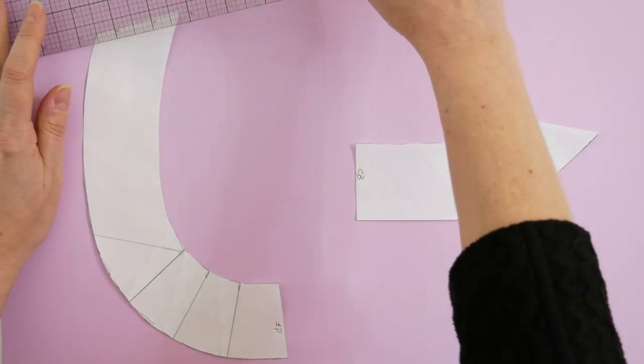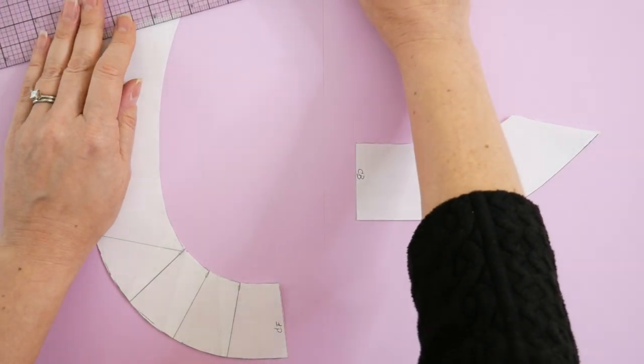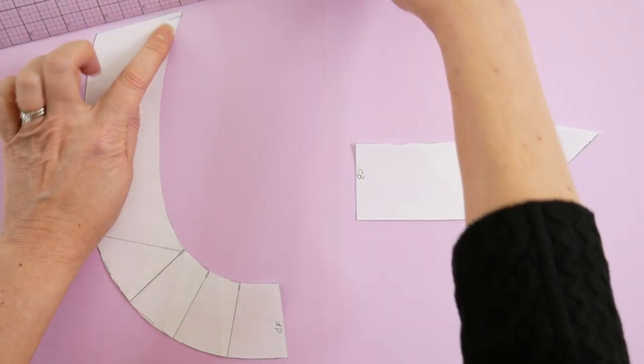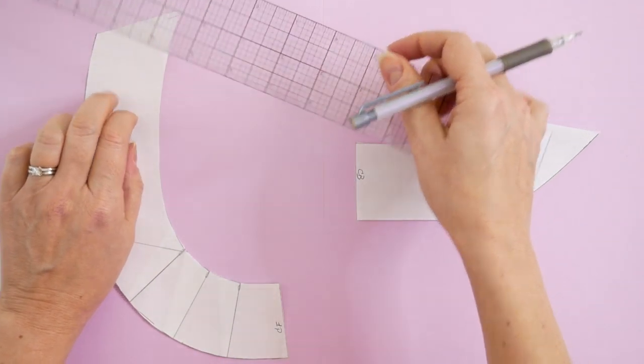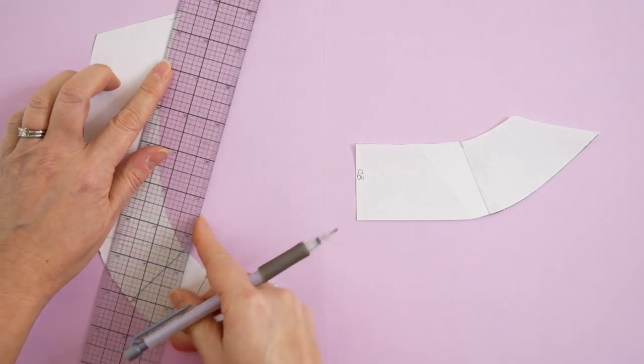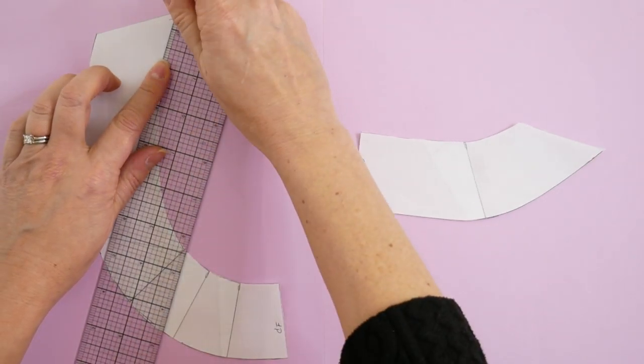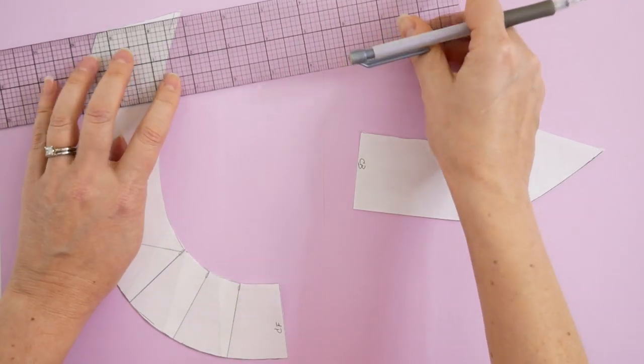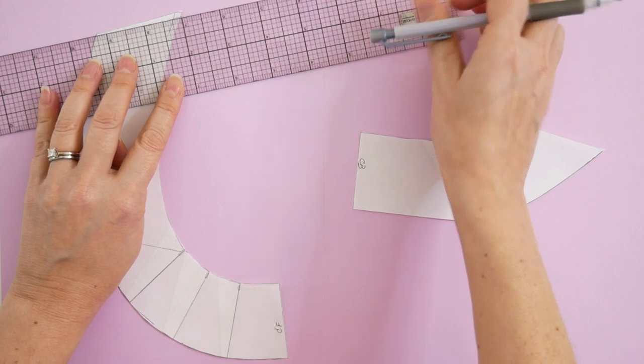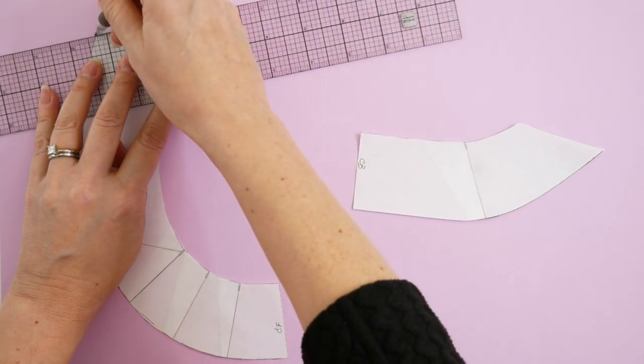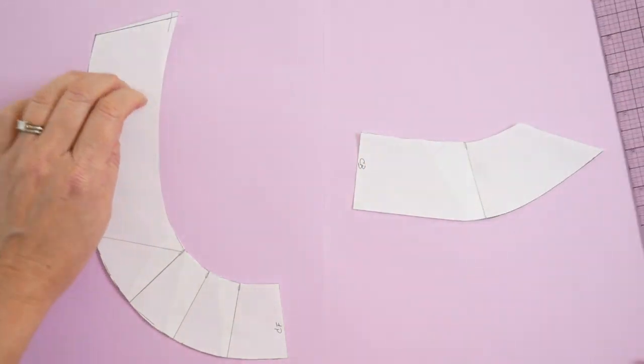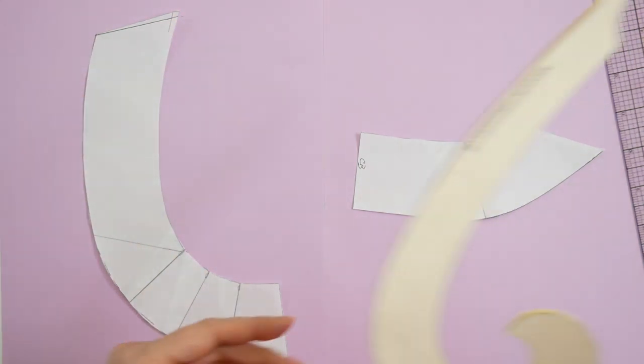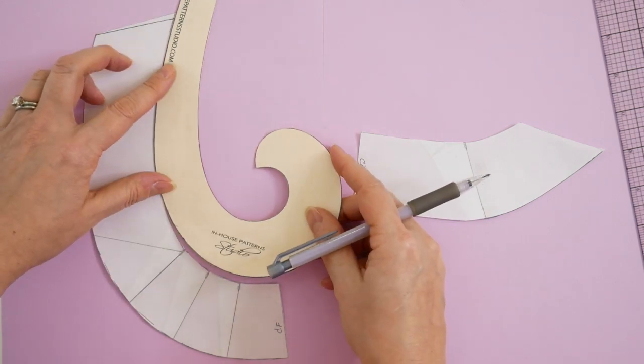So it's a really simple little pattern alteration - it's going to be an eighth of an inch there and an eighth of an inch here. So we're going to go from an eighth of an inch to nothing at the outside edge of the neckline facing, and this one we are simply going to blend right into the existing neckline here.